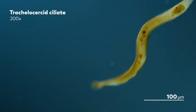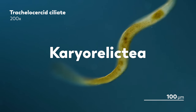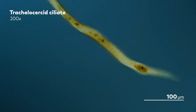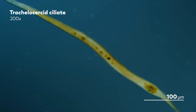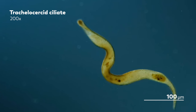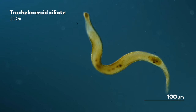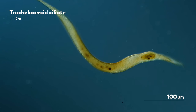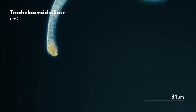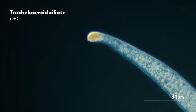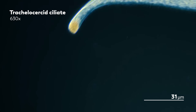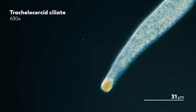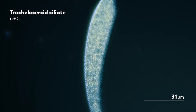It's a member of a class of ciliates called the karyorelictia. We'll be showing you a few different trichelocercids today, though we can't specify their genera any further without using other experimental and microscopy techniques to see the smaller structures inside them. What they all have in common is that they come from a place we haven't really visited yet on our journey through the microcosmos — they come from the beach.